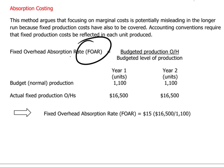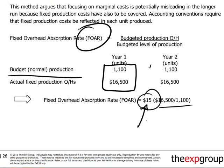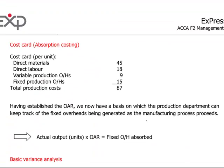To illustrate, suppose we had budgeted normal production at a company of 1,100 units per year, and fixed production overheads based on experience equal to $16,500. We can find the relationship between production overheads and the level of activity expressed in units produced: $16,500 divided by 1,100 units gives us $15 per unit as our fixed overhead absorption rate.